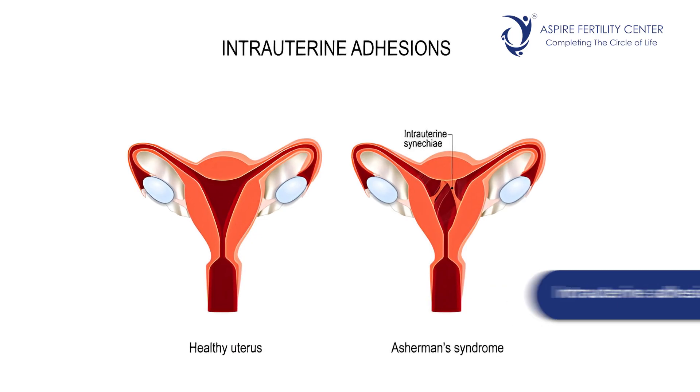Identifying endometritis is one of the important elements we can find on hysteroscopy. Another finding can be intrauterine adhesions. A past infection, history of past miscarriages, or a procedure called D&C — commonly done to clear a pregnancy — can lead to intrauterine adhesions wherein the uterine walls get stuck together. Such scarring can lead to not only infertility but also poor pregnancy outcomes. This is called Asherman's syndrome, and these adhesions can be removed by operative hysteroscopy.